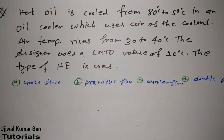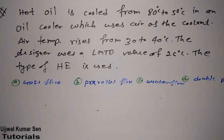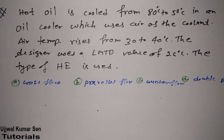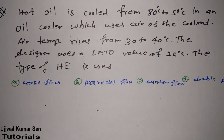I'm Joel Kumar Sen, and in this short video we are going to learn about a question that has been asked previously for two marks. In this question, a well is cooled from 80 degrees centigrade to 50 degrees centigrade in a well cooler which uses air as the coolant. The air temperature rises from 30 to 40 degrees, and the designer uses an LMTD value of 26 degrees.